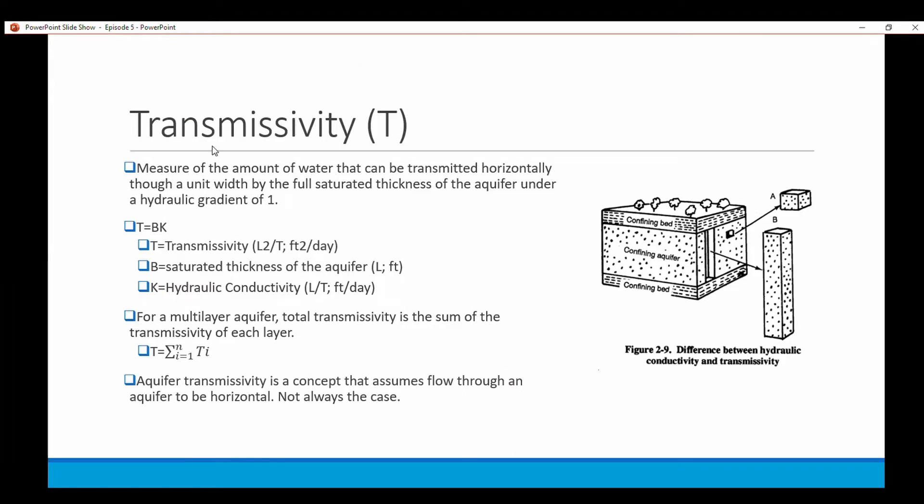Transmissivity is a measure of the amount of water that can be transmitted horizontally, not vertically, through a unit width by the full saturated thickness of the aquifer under a hydraulic gradient of one. It's important to recognize that we're only talking about confined aquifers when we're talking about transmissivity. To calculate it, T equals bk where T equals transmissivity and b equals saturated thickness of the aquifer.